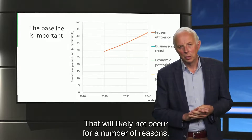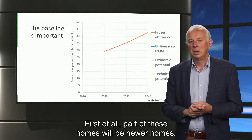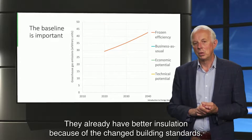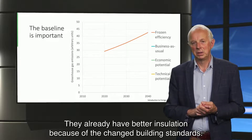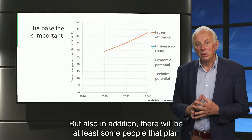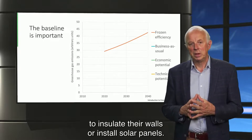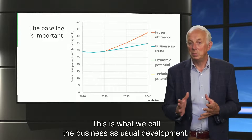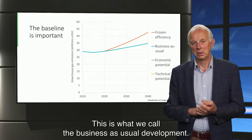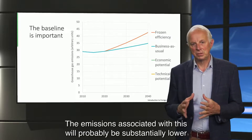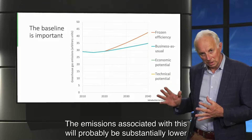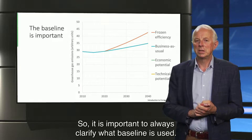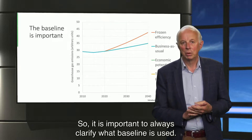Frozen technology will likely not occur for a number of reasons. First of all, part of these homes will be newer homes that already have better insulation because of changed building standards. But also, there will be at least some people that plan to insulate their walls or install solar panels. This is what we call the business-as-usual development. The emissions associated with this will probably be substantially lower than in the case of the frozen technologies scenario. So it is important to always clarify what baseline is used.